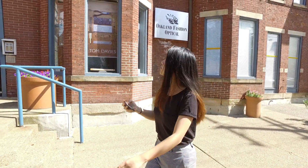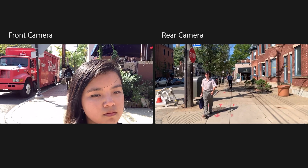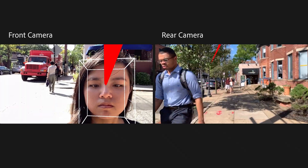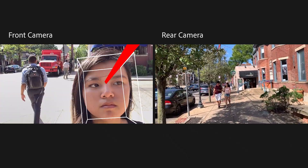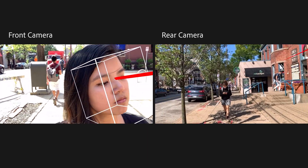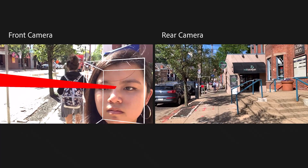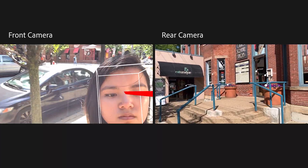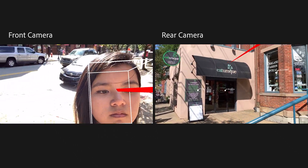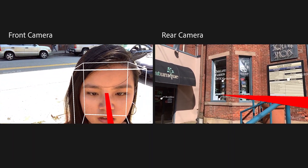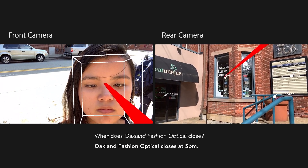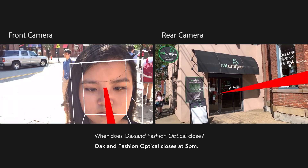We achieve this by simultaneously opening the front and rear cameras of a smartphone. We use the iPhone's front-facing camera to track the head in 3D, including its direction vector. Because the geometry of the front and back cameras are known, we can raycast the head vector into the world as seen by the rear-facing camera. This allows the user to intuitively define an object or region of interest using the head gaze.